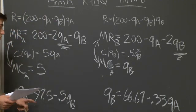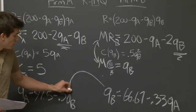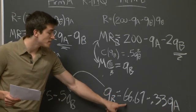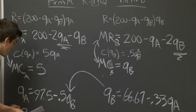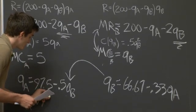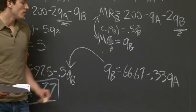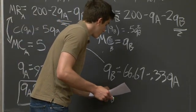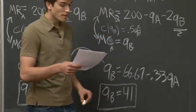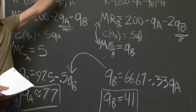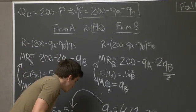Now that we have the two reaction curves for firm A and firm B, we're going to plug firm B's reaction curve — which is 66.67 minus 0.33QA — into firm A's reaction curve and solve for QA. Doing this, we find that firm A is going to produce approximately 77 units. Taking this 77 and plugging it into firm B's reaction function, we find that firm B is going to produce approximately 41 units. To find the equilibrium price, we plug QA and QB back into our disaggregated demand function and solve, finding price equals 82.